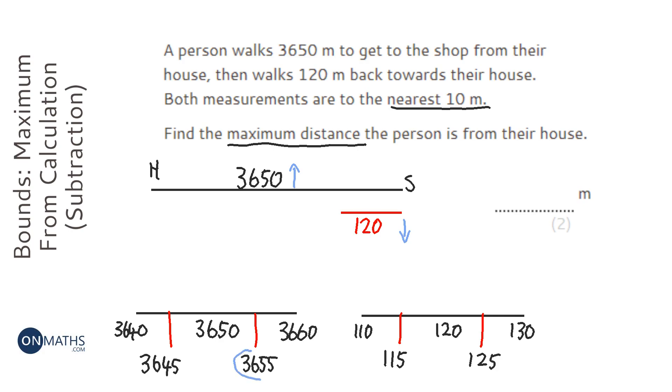So we're going to do 3655, which is the upper bound of that, take away the lower bound of the 120, which is 115. I'll calculate that: